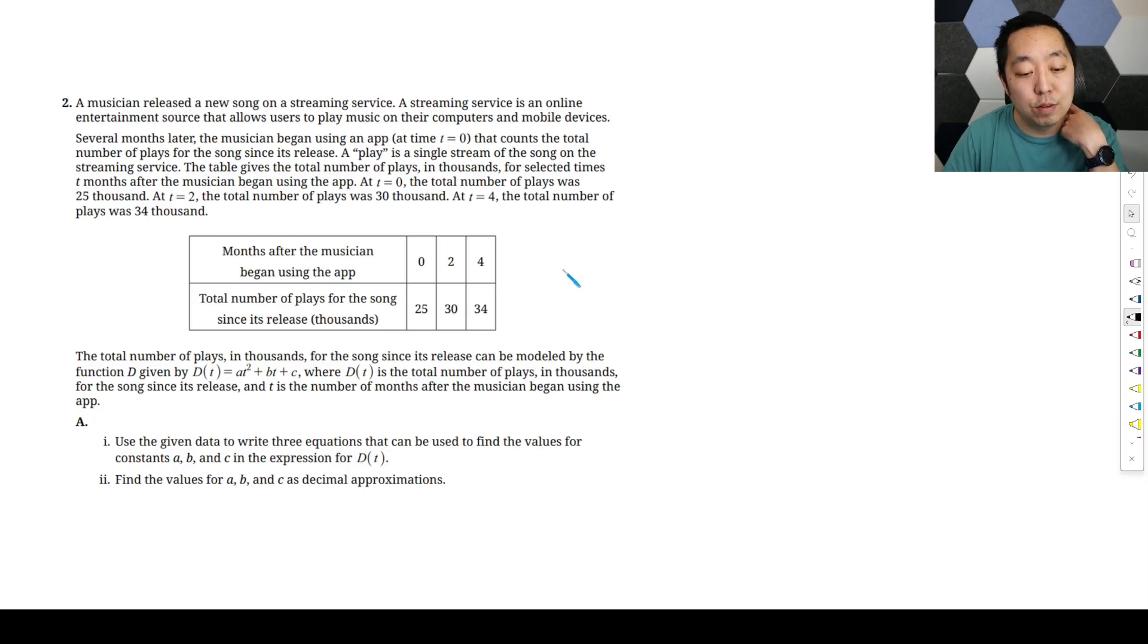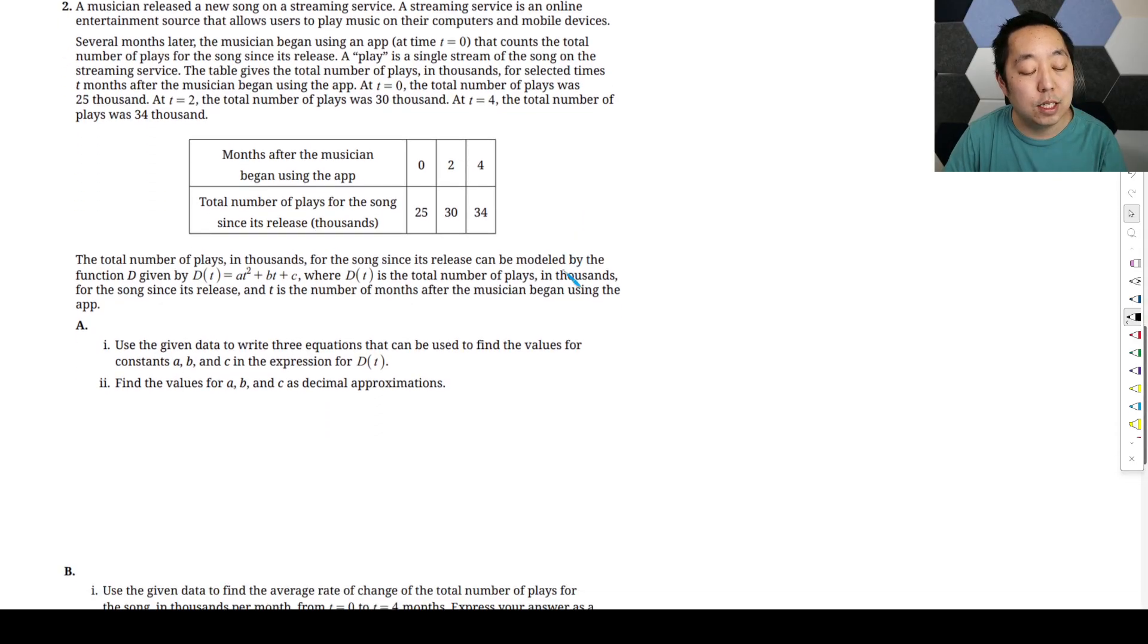Use the given data to write three equations that we use to find the values for the constants a, b, and c in the expression for D(t). Well, we're just going to plug it in here. We're going to say D(0) is plugging zero into this expression. It's going to be a times zero squared plus b times zero plus c, and we know D(0) has to be 25.